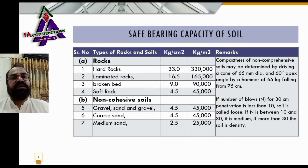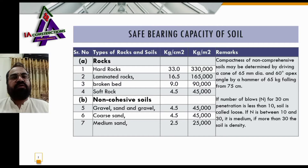Number three: broken bed — bearing capacity of broken bed is 9 kg per centimeter square and 90,000 kg per meter square. Number four: soft rock — bearing capacity of soft rock is 4.5 kg per centimeter square and 45,000 kg per meter square.